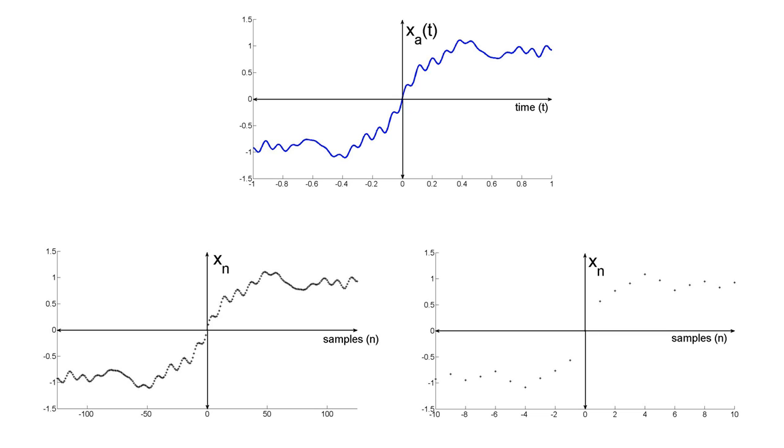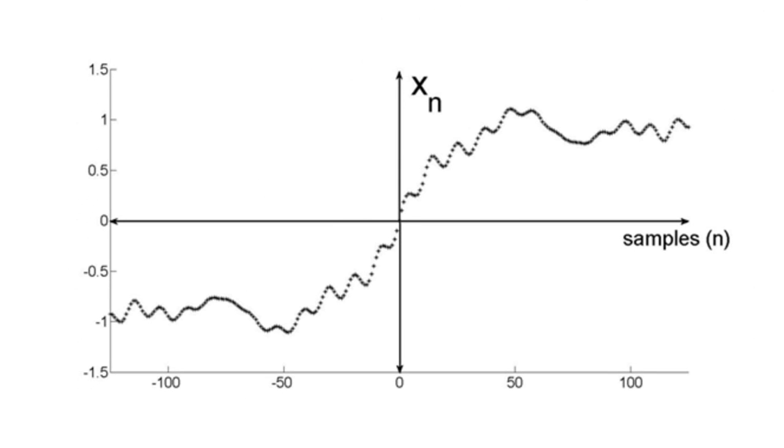When we have a band-limited signal, we can approximate the analog signal X sub A of T with the digital signal X sub N. The N tells us that X is a function of samples, N, rather than a function of time, T.